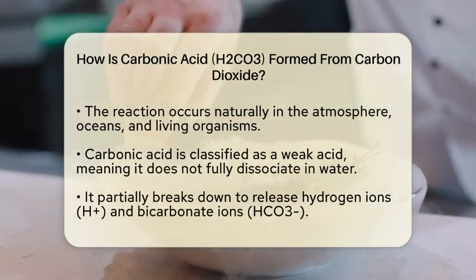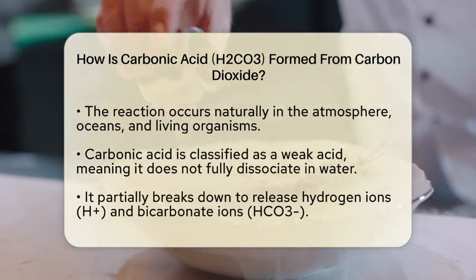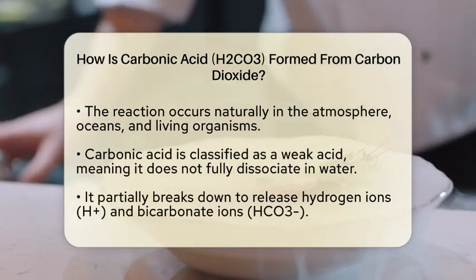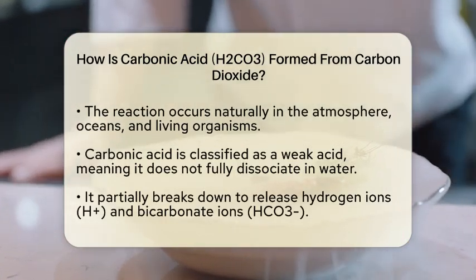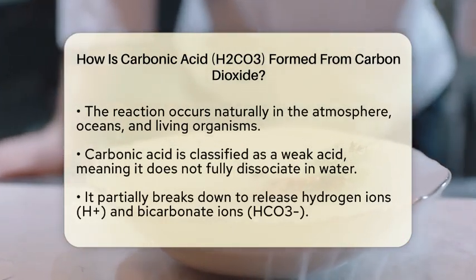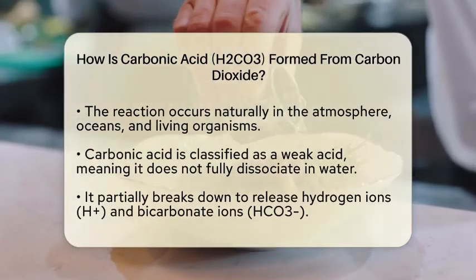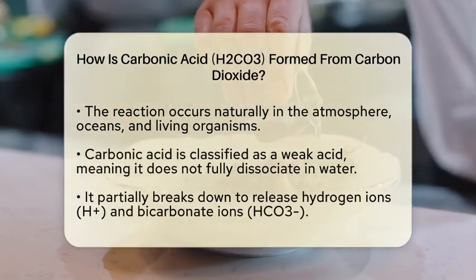The double arrow in this equation shows that the reaction can go in both directions. This means that carbonic acid can break back down into carbon dioxide and water.